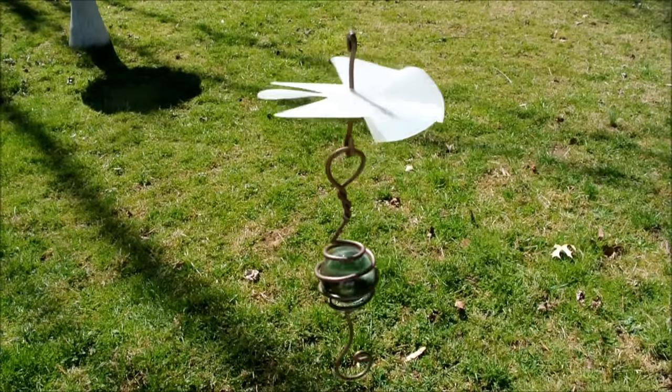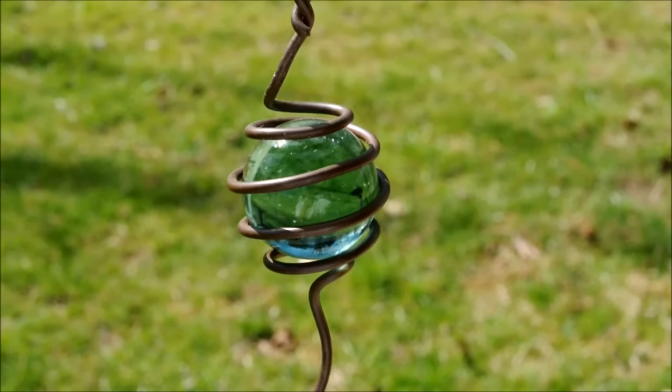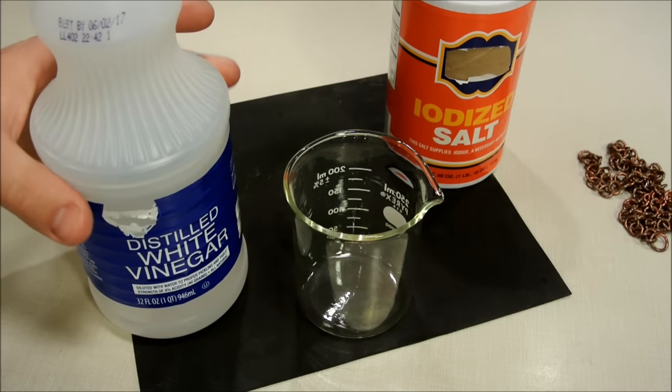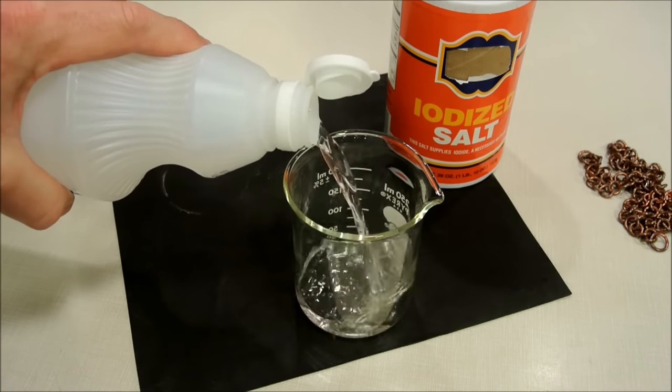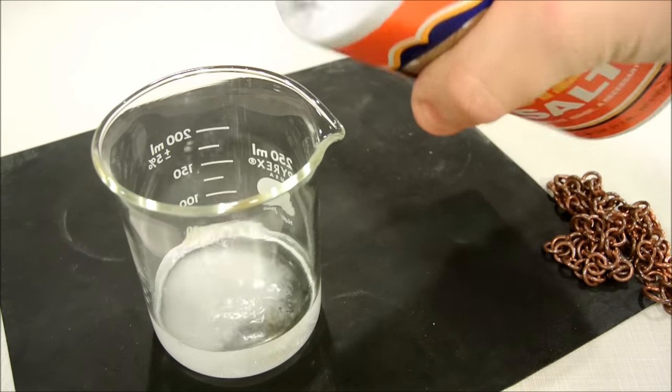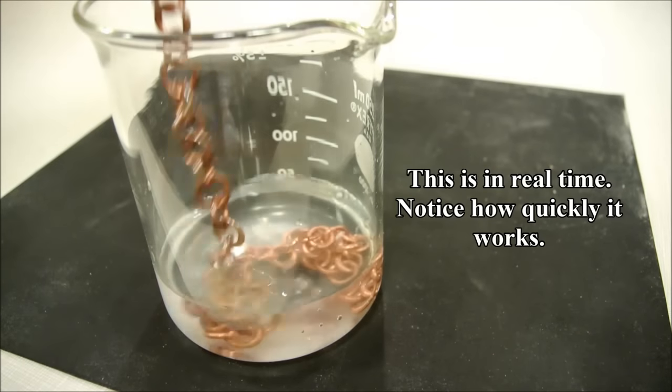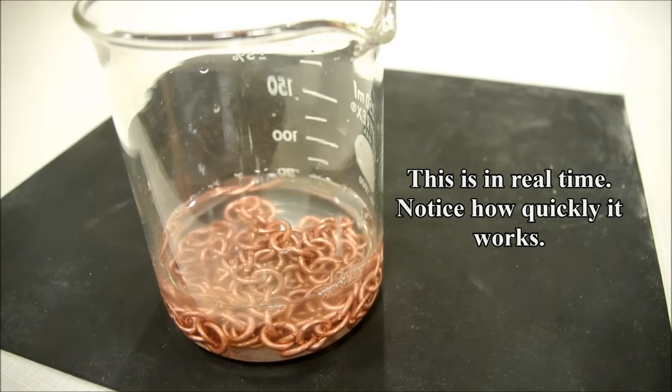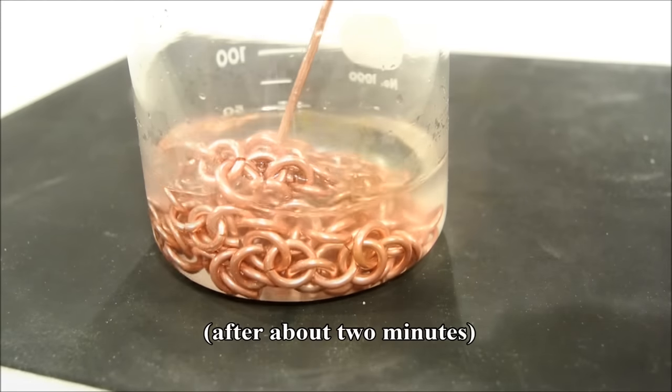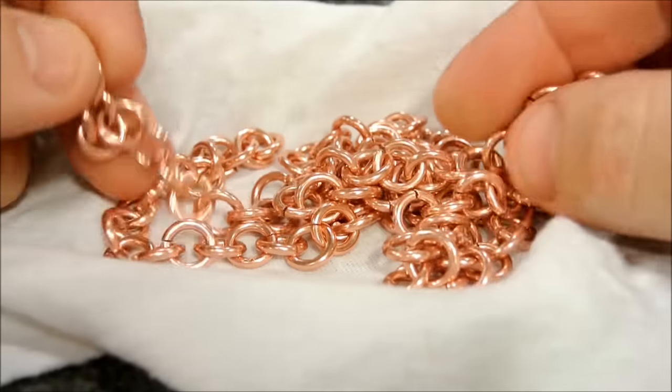Over time copper naturally will oxidize and you may prefer this patina look, but if you don't it's a very simple procedure to restore it to a high luster shine using only salt and vinegar. After you remove it from the solution just rinse it off with some dish soap and water. And that's all it takes.